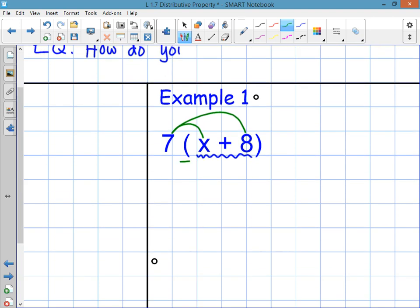So here it is. 7 times x is just written 7x plus 7 times 8. 7x is just 7x plus 7 times 8 is 56. 7x plus 56 is your answer. Notice the problem is written. There's one step in between and then your answer.